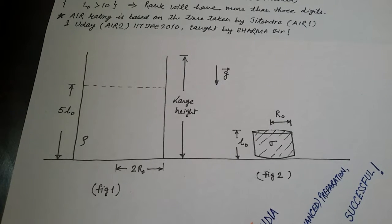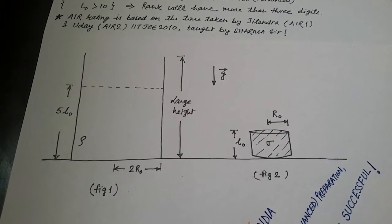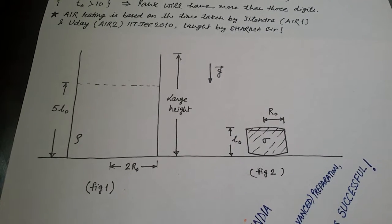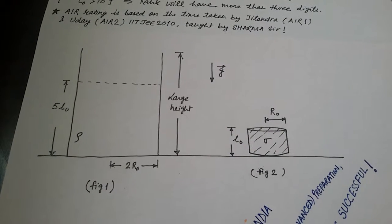There is a cylindrical block of wood, density sigma, sigma less than rho, having radius R0 and length L0. See figure 2, so this block is shown here in this figure.